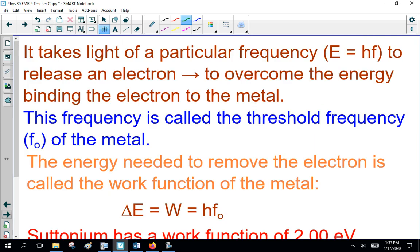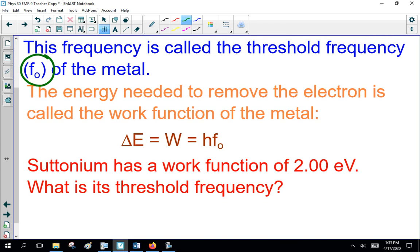Remember, frequency talks about energy. It takes a particular frequency, E equals HF, to release an electron, to overcome the energy binding the electron to the metal. This frequency is called the threshold frequency, F sub zero, of the metal. The energy needed to remove the electron is called the work function of the metal, E equals W, which is HF sub zero.